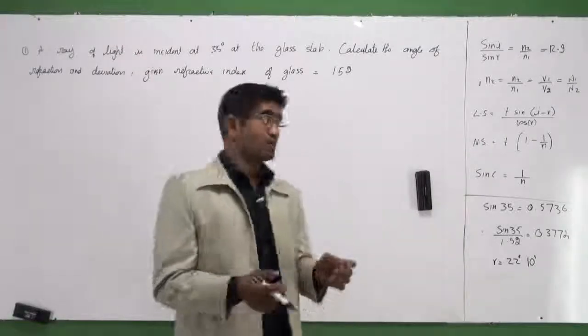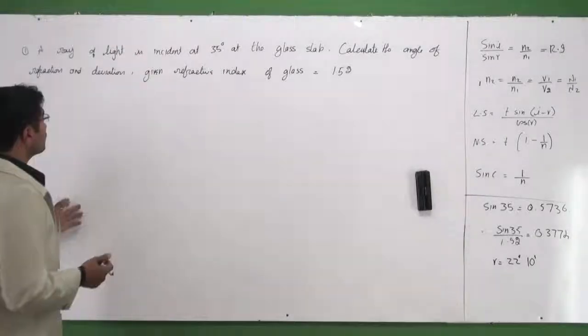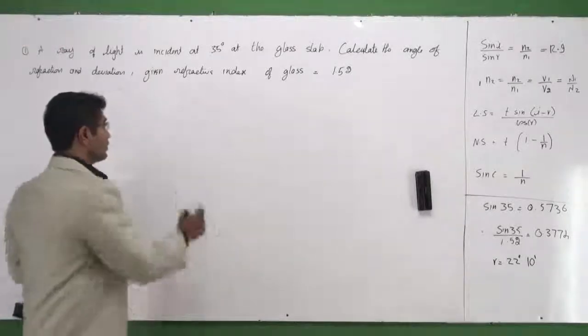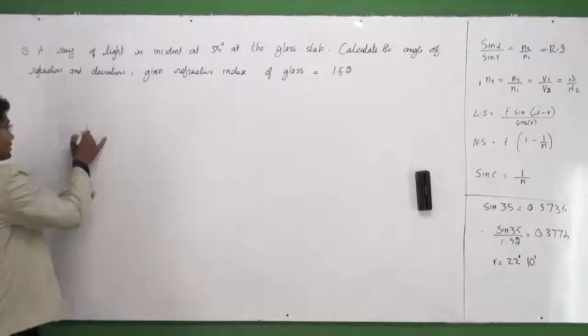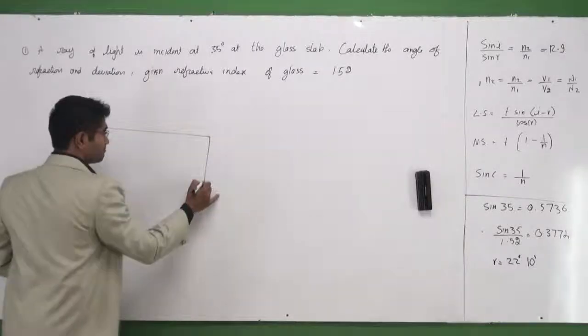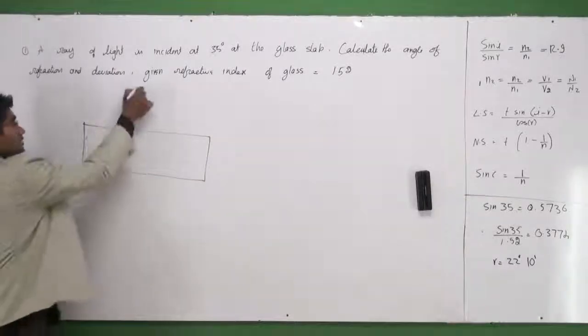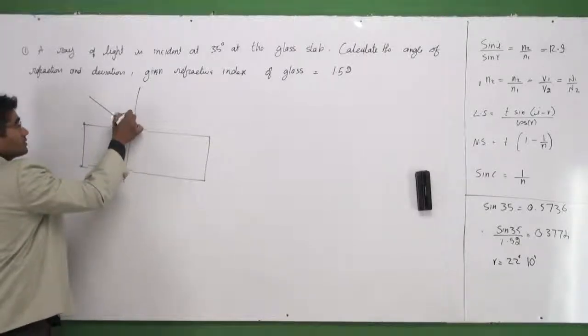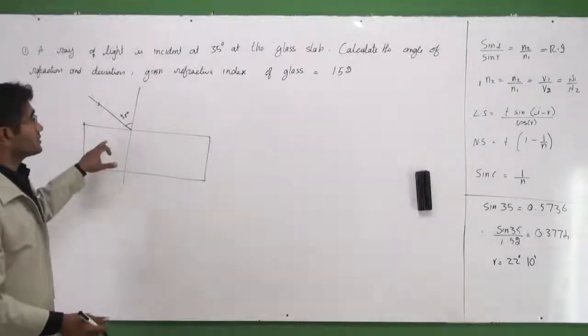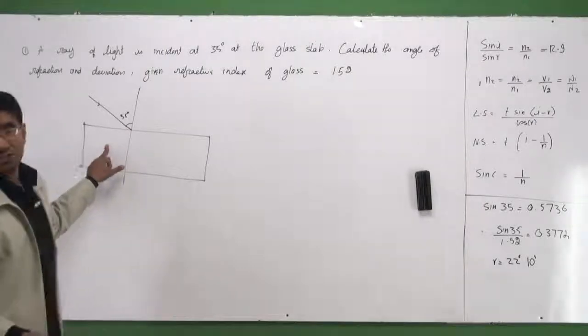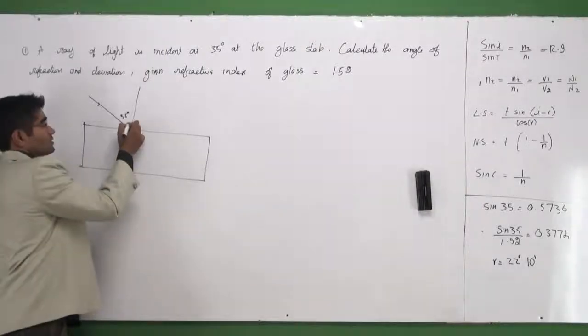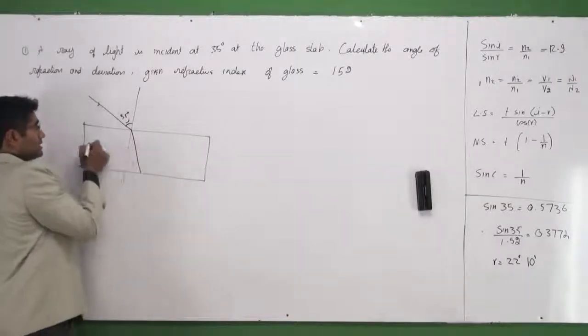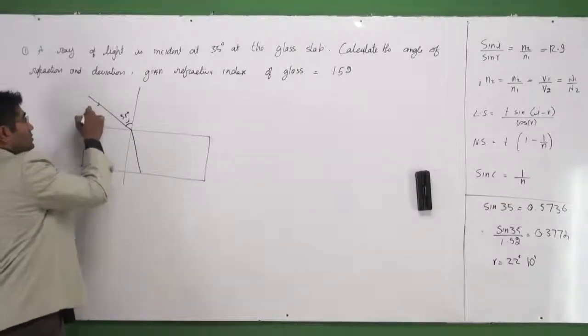Let's start this problem and see how to work with it. This problem says a ray of light is incident at 35 degrees at the glass slab. So first thing is I have a glass slab. Let me draw it here. The ray of light is incident at 35 degrees, and we need to calculate the angle of refraction and deviation. This guy is the angle of incidence, and the angle of refraction will be this. I know that this guy is denser than this, which is a rarer medium.